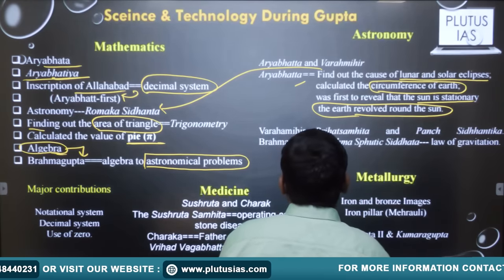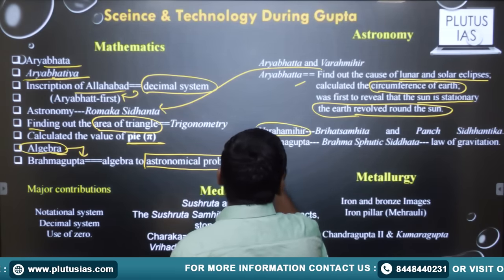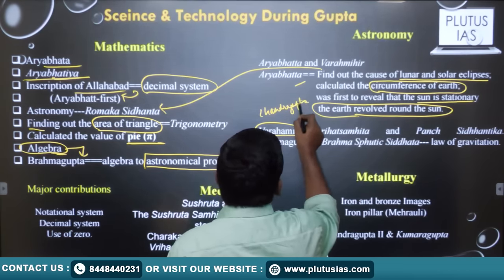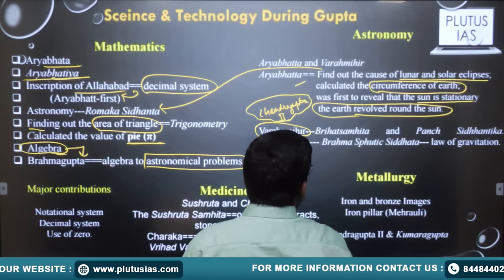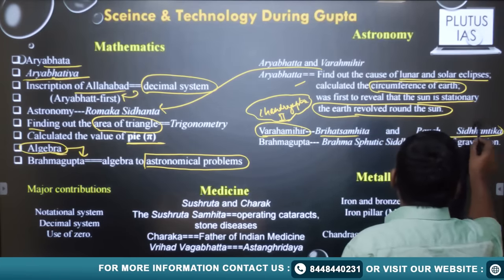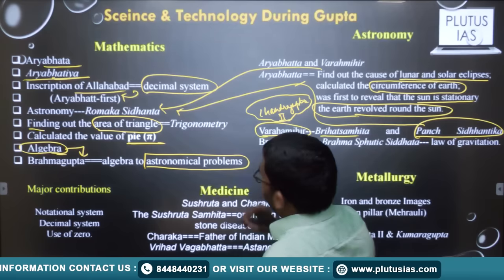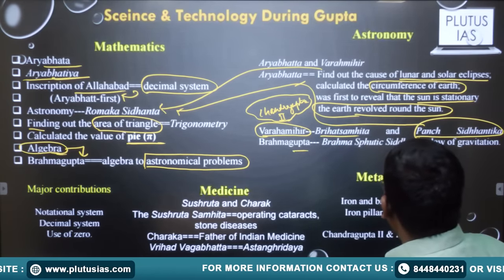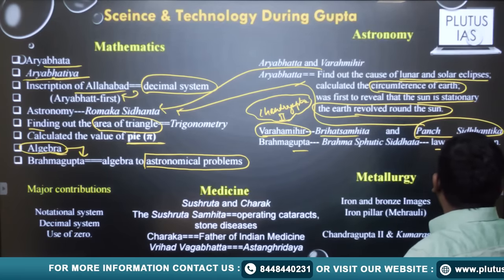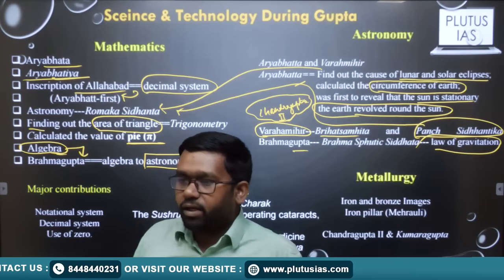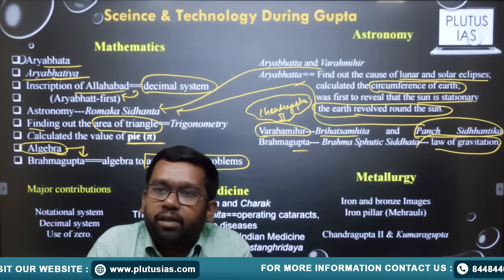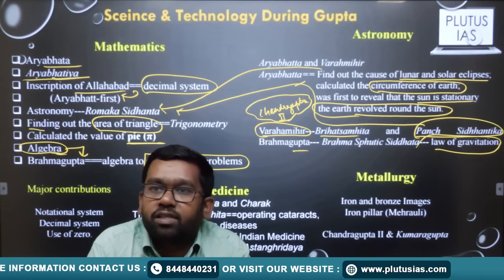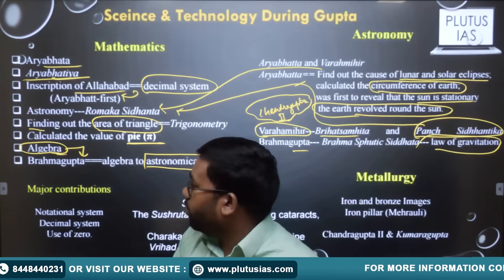Another famous mathematician and astronomer was Brahmagupta, who was in the court of Chandragupta. He wrote in the Sanskrit language and authored Brihat Samhita and Pancha Siddhanta — the Romaka Siddhanta is one part of the Pancha Siddhanta. Brahmagupta also wrote the Brahmasphuta Siddhanta, and he is the person who gave a law of gravitation — a concept that Newton would later formalize in the 18th and 19th century — making ancient India very advanced in this period.